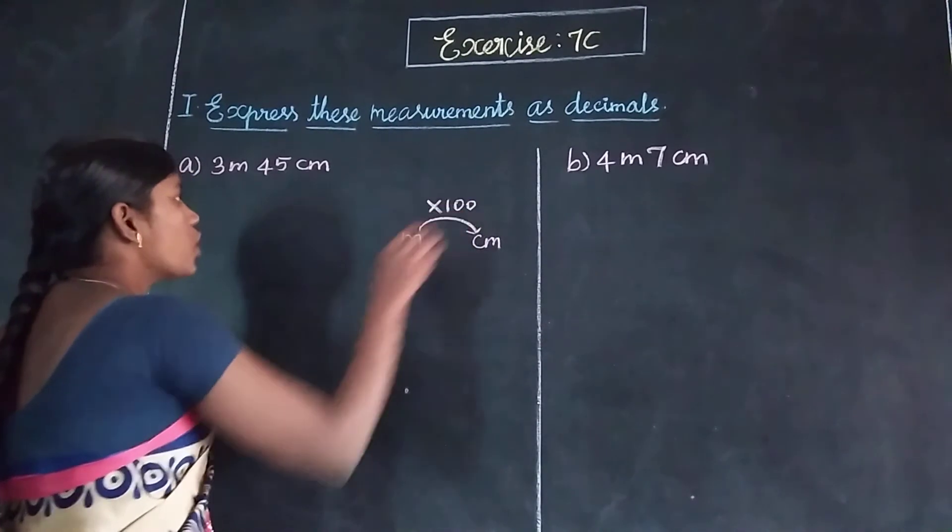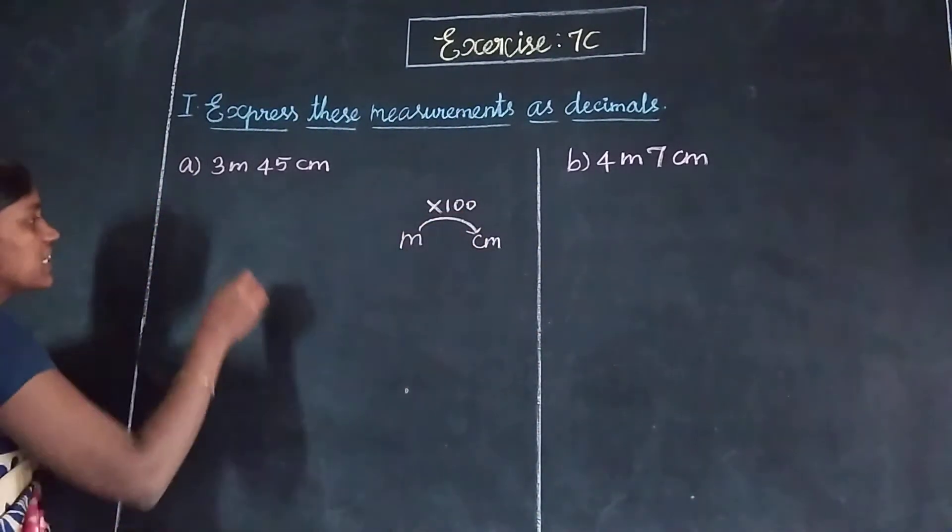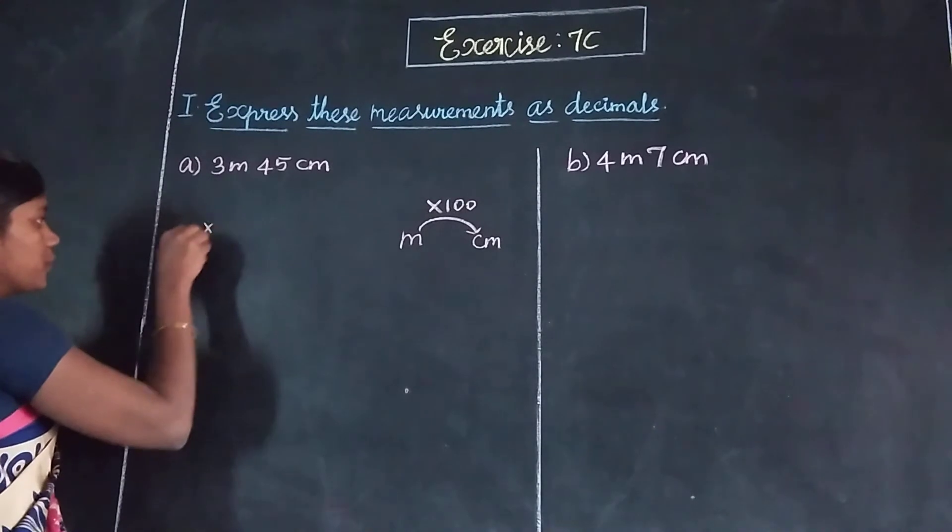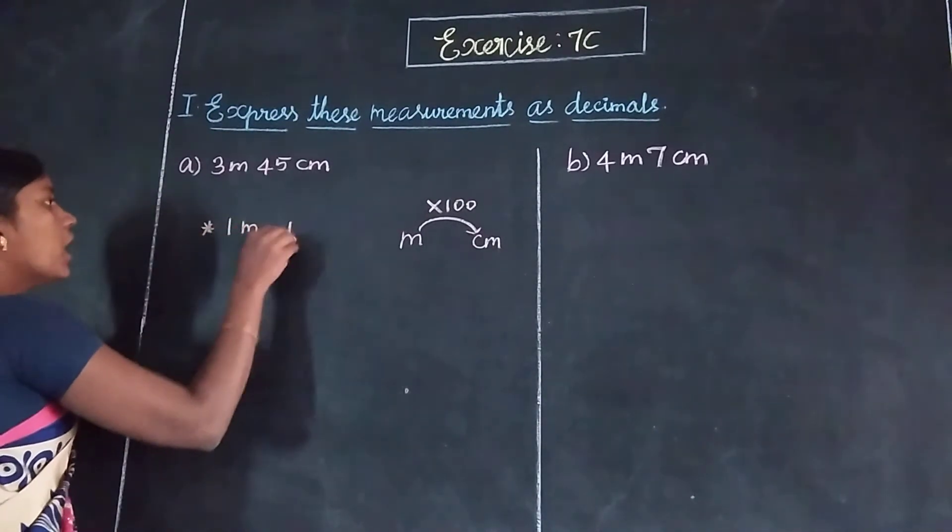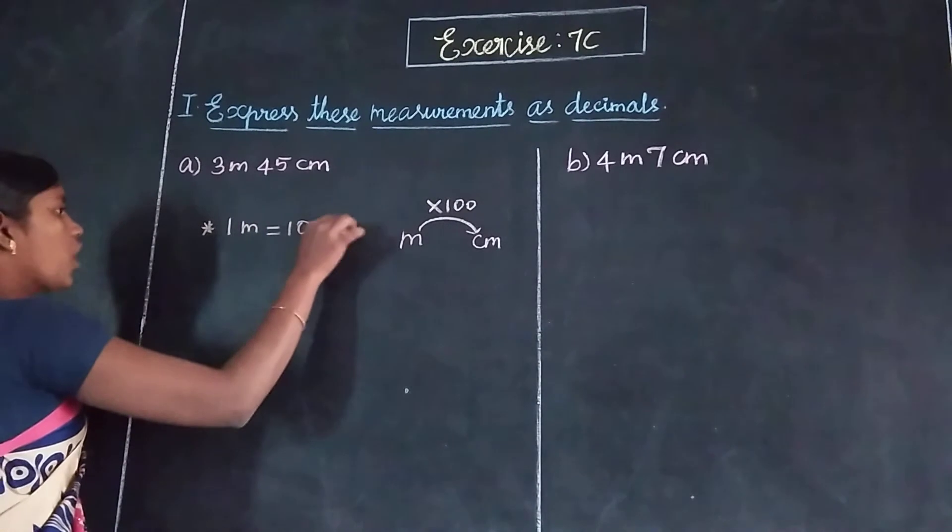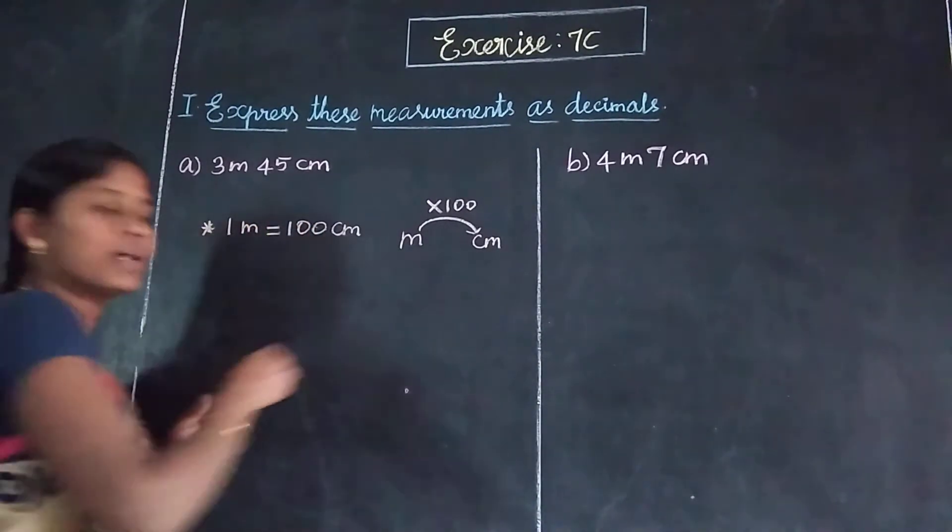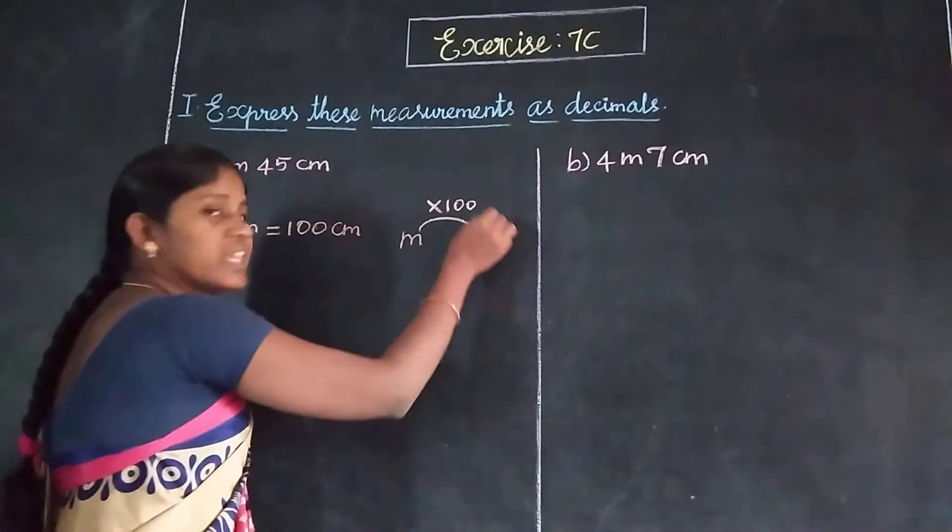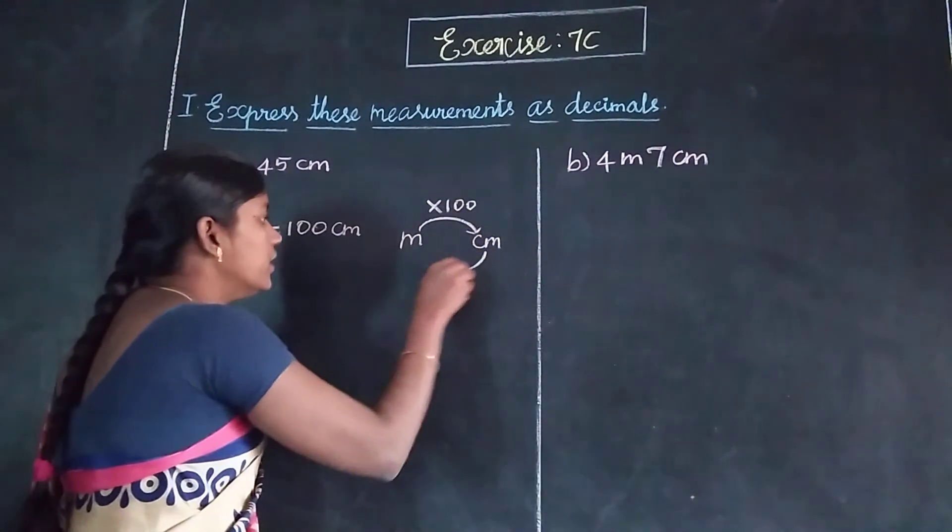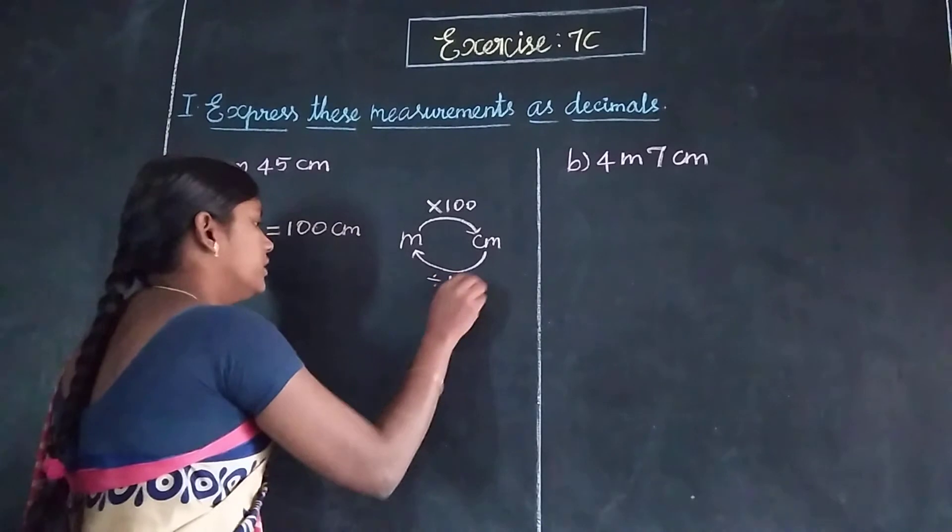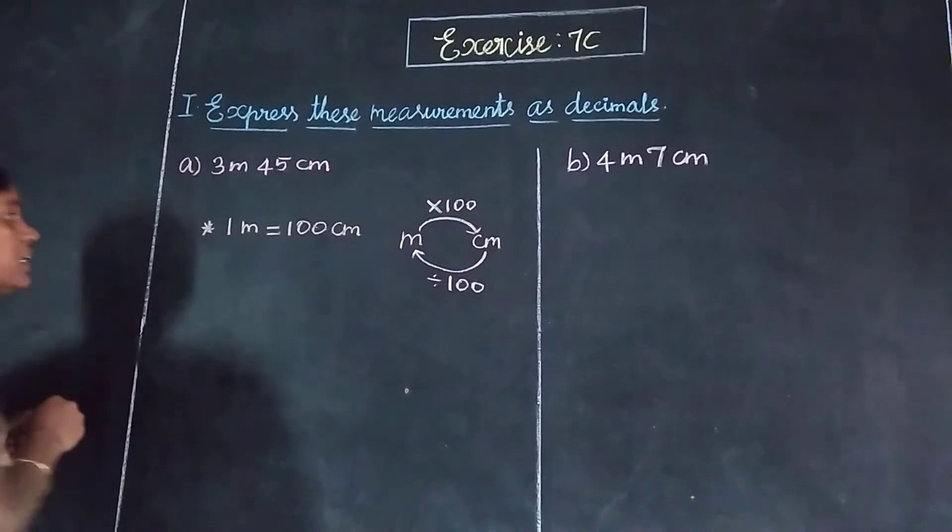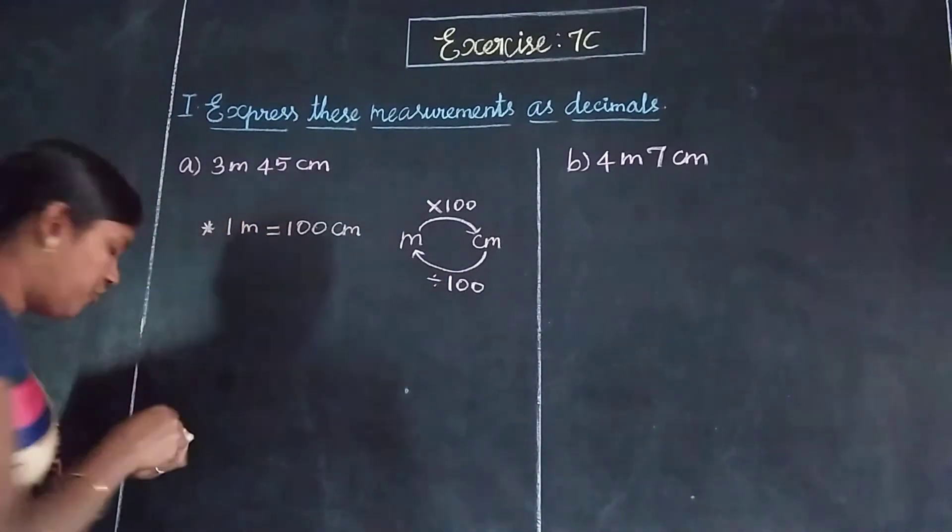So, the formula is: one meter equals 100 centimeters. Meter to centimeter, multiply by 100. Centimeter to meter, divide by 100. One meter equals 100 centimeters is the formula.